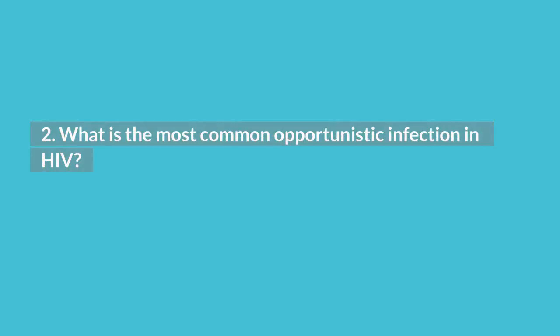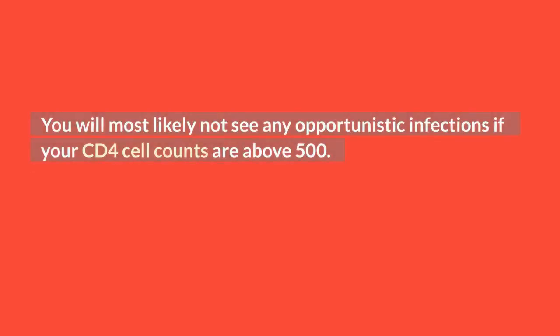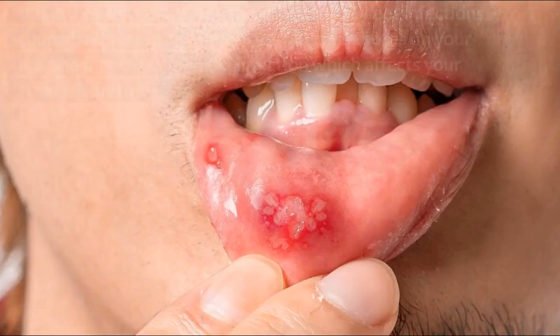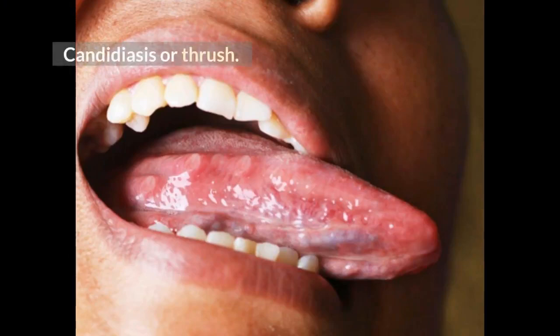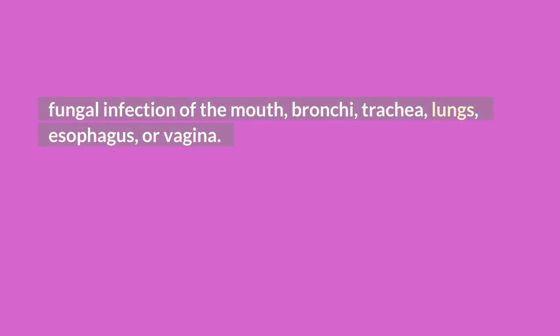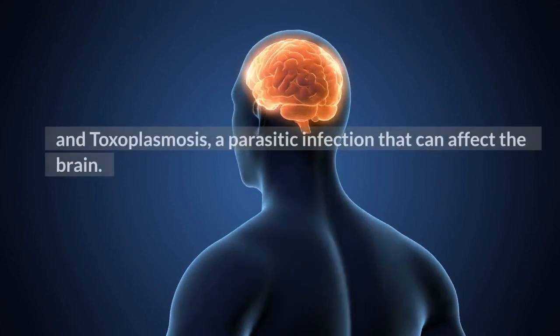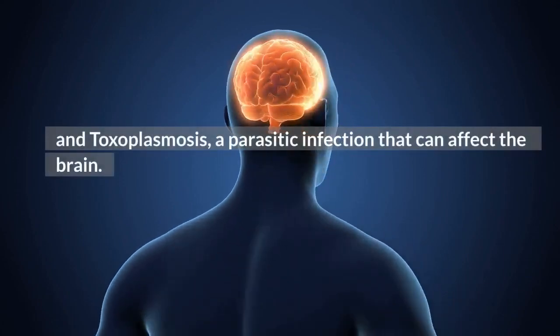What is the most common opportunistic infection in HIV? You will most likely not see any opportunistic infections if your CD4 cell counts are above 500. But if they fall below, prepare to meet infections caused by: Herpes simplex virus, which causes sores on your lips and mouth; Salmonella infection, which affects your stomach and intestines; Candidiasis or thrush — fungal infection of the mouth, bronchi, trachea, lungs, esophagus, or vagina; and Toxoplasmosis, a parasitic infection that can affect the brain.